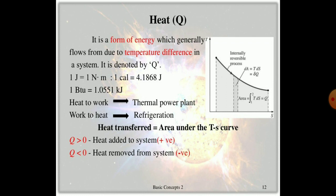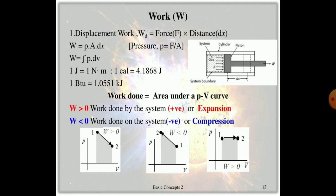Now we consider work — specifically displacement work. Work is the product of force and displacement, and work done is always denoted by the area under the PV curve. Work done by the system is always positive (expansion), and work done on the system is always negative (compression).